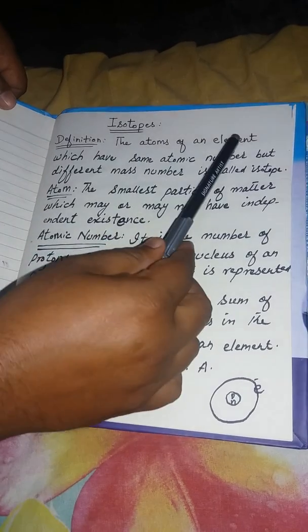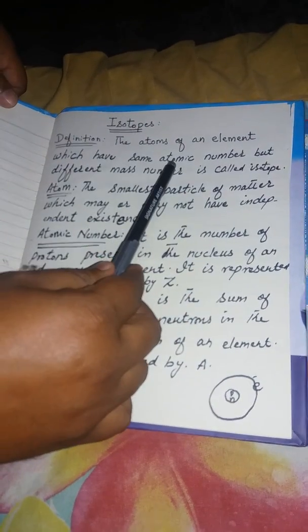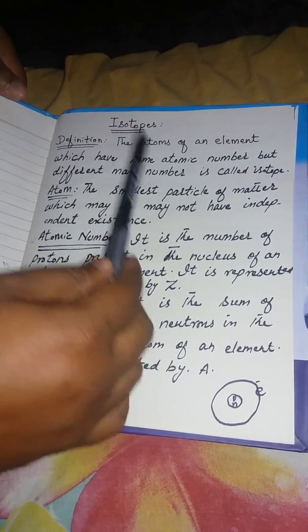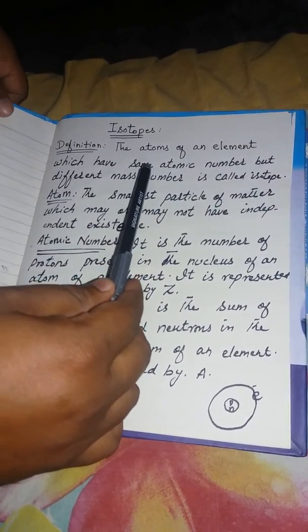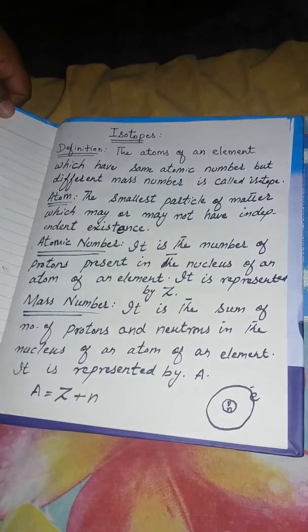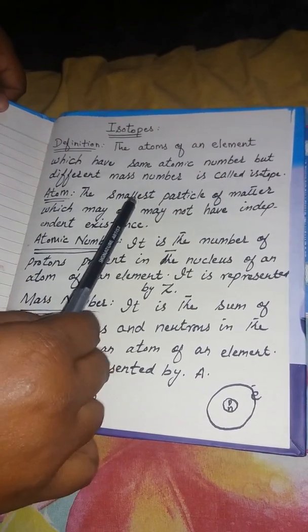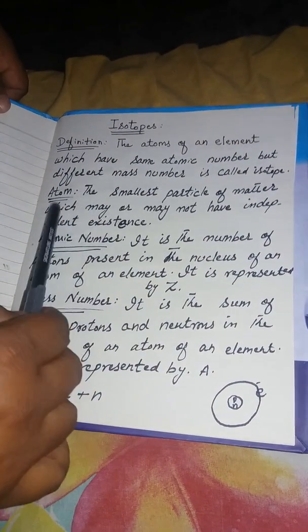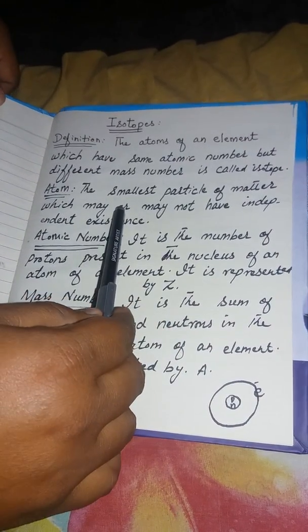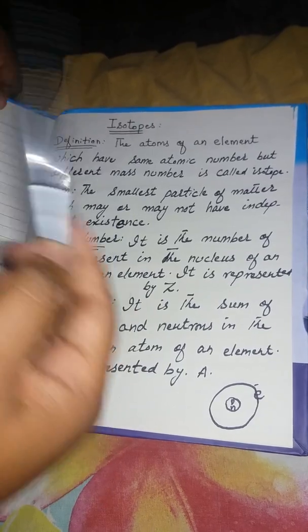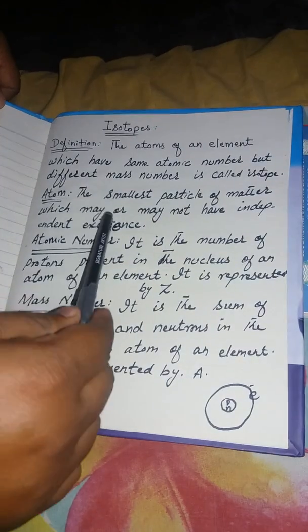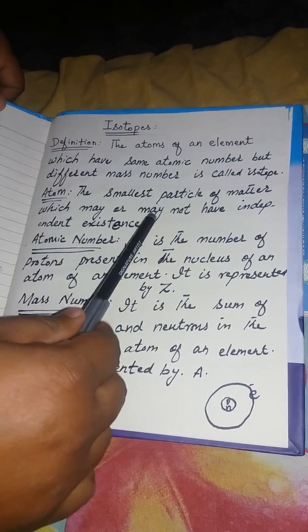Dear students and viewers, we can see the words atoms, element, atomic number, and mass number. I will define these words one by one. First of all, I will define the word atom. What is atom? The smallest particle of matter which may or may not have independent existence.